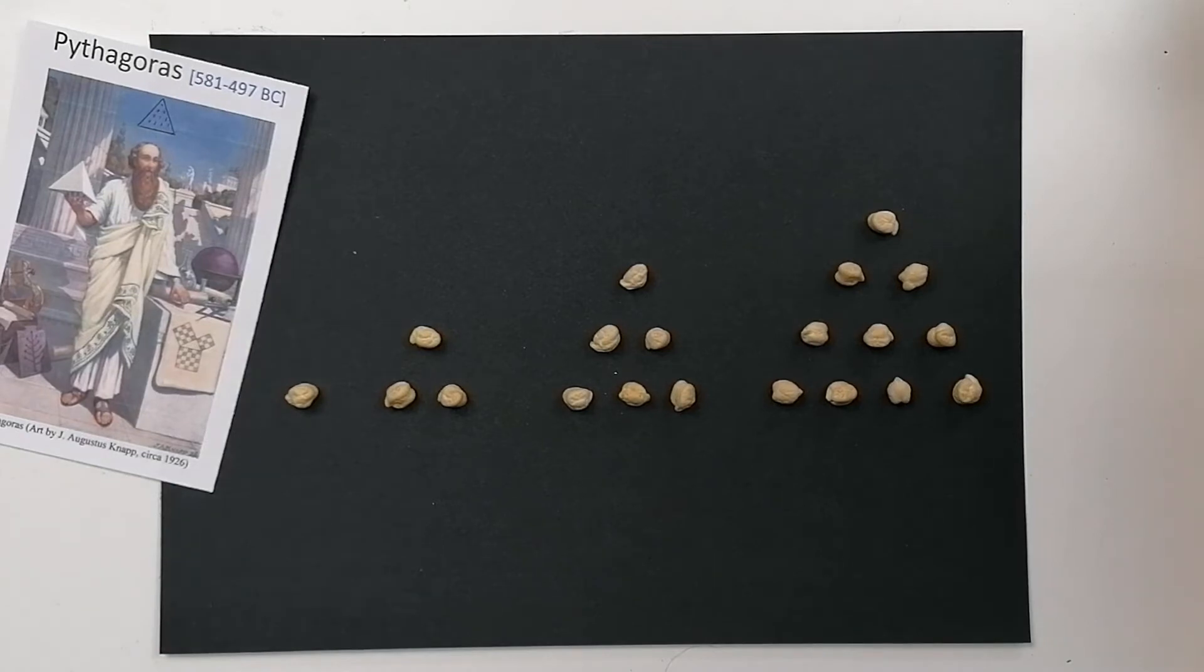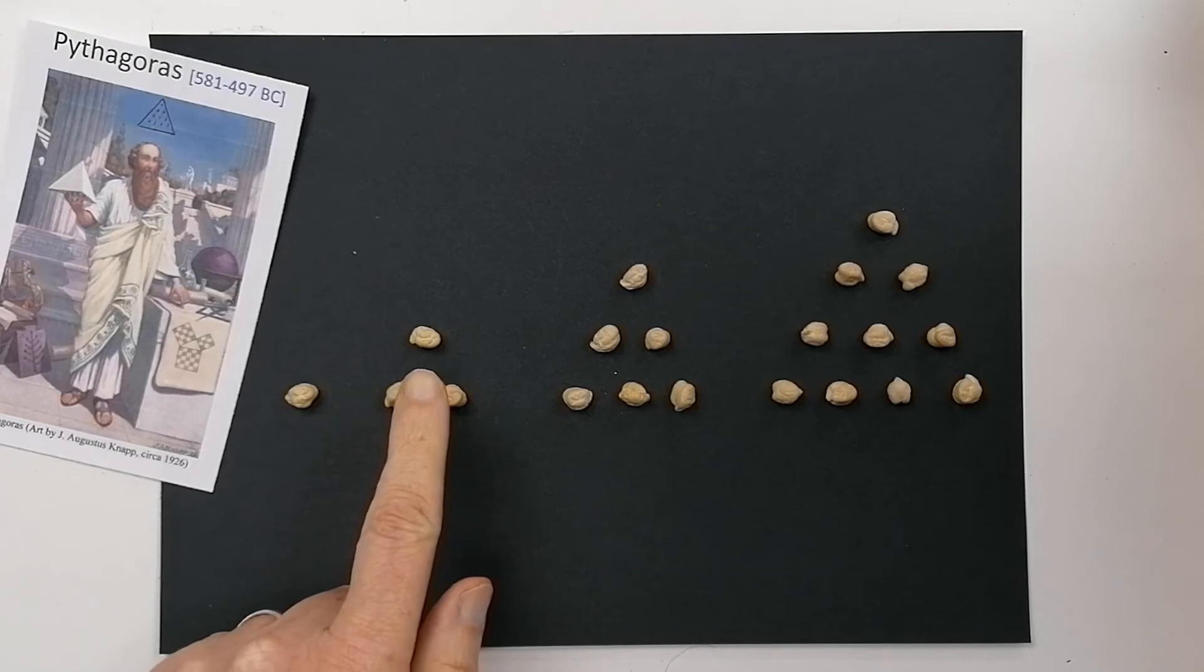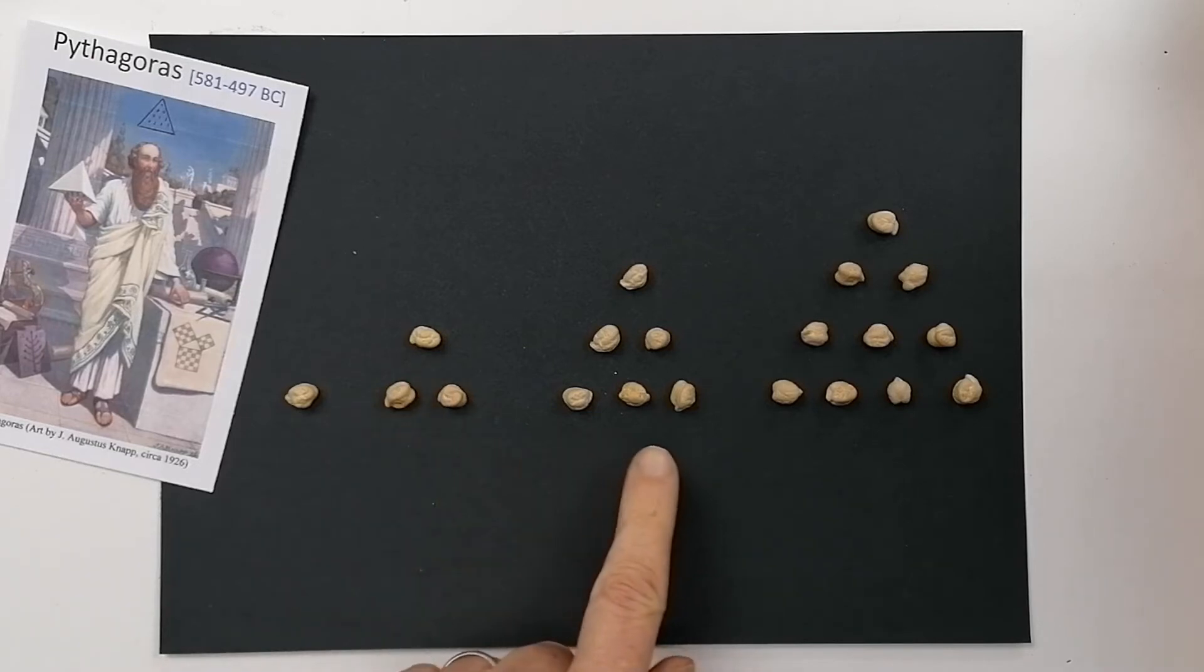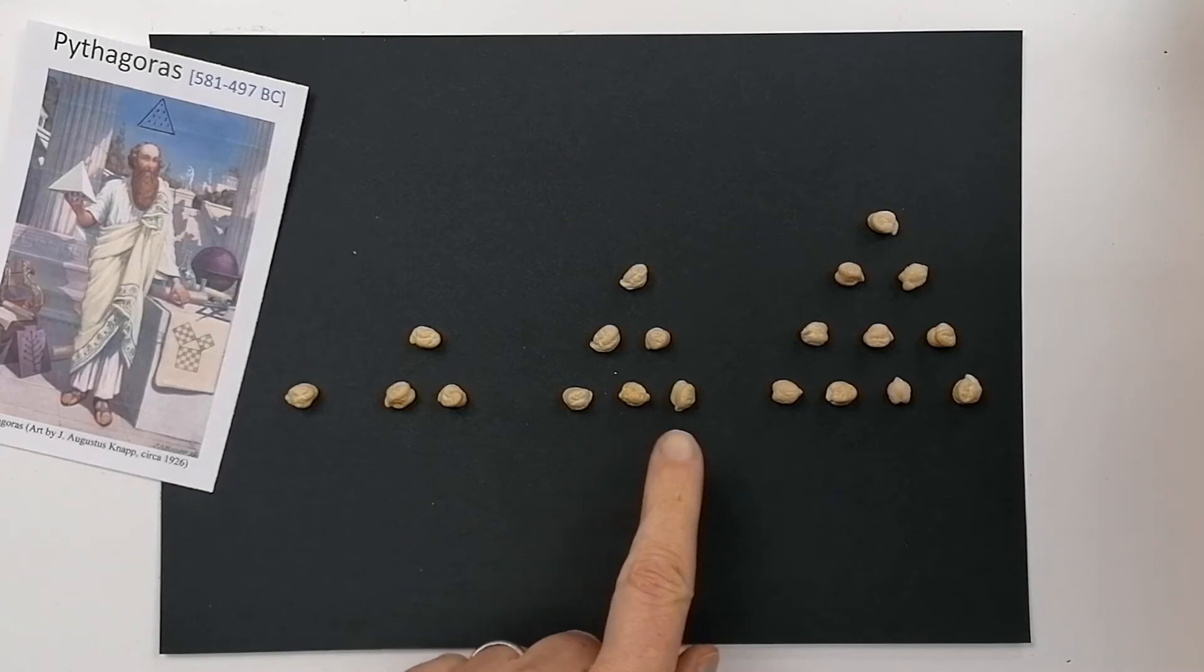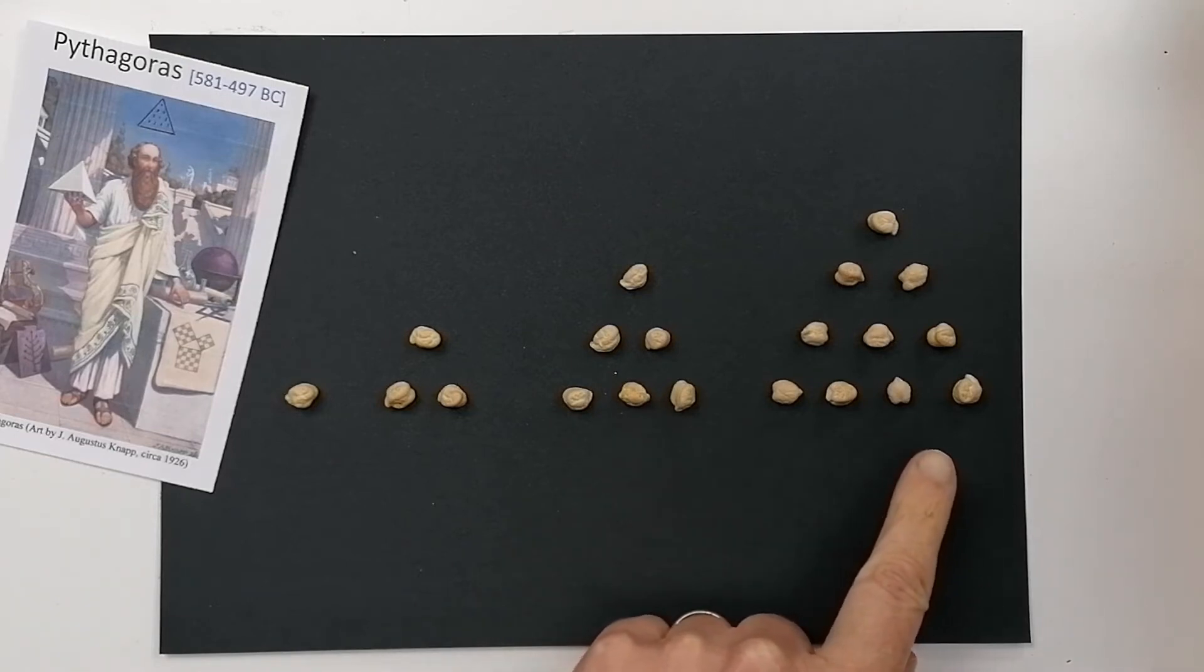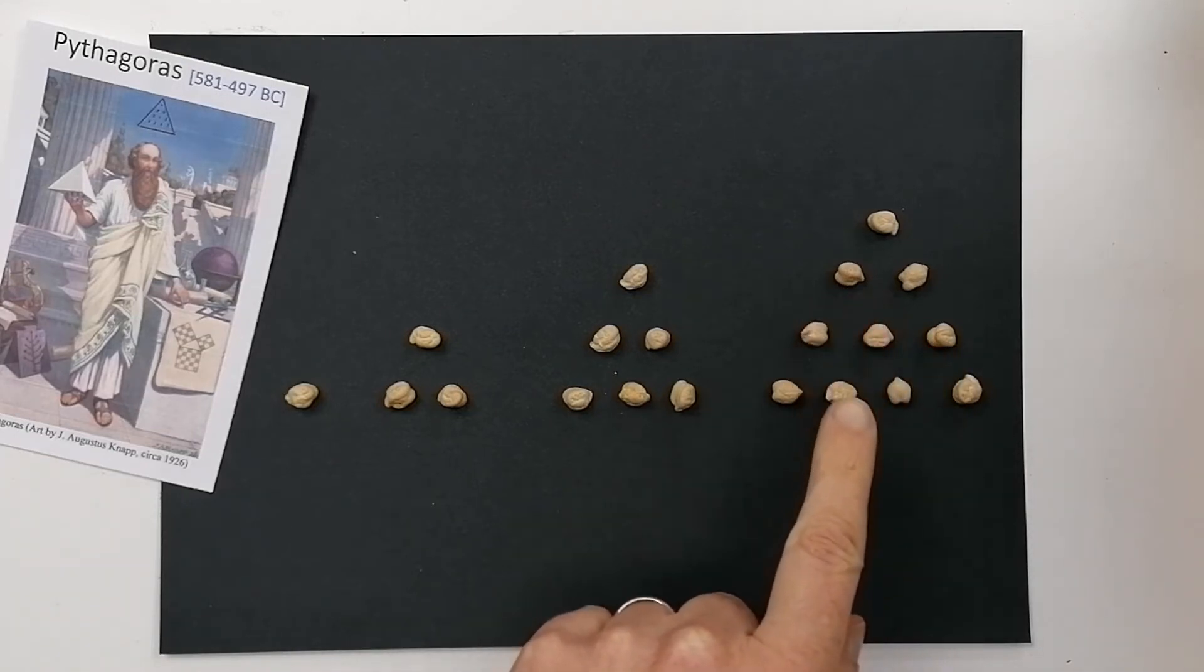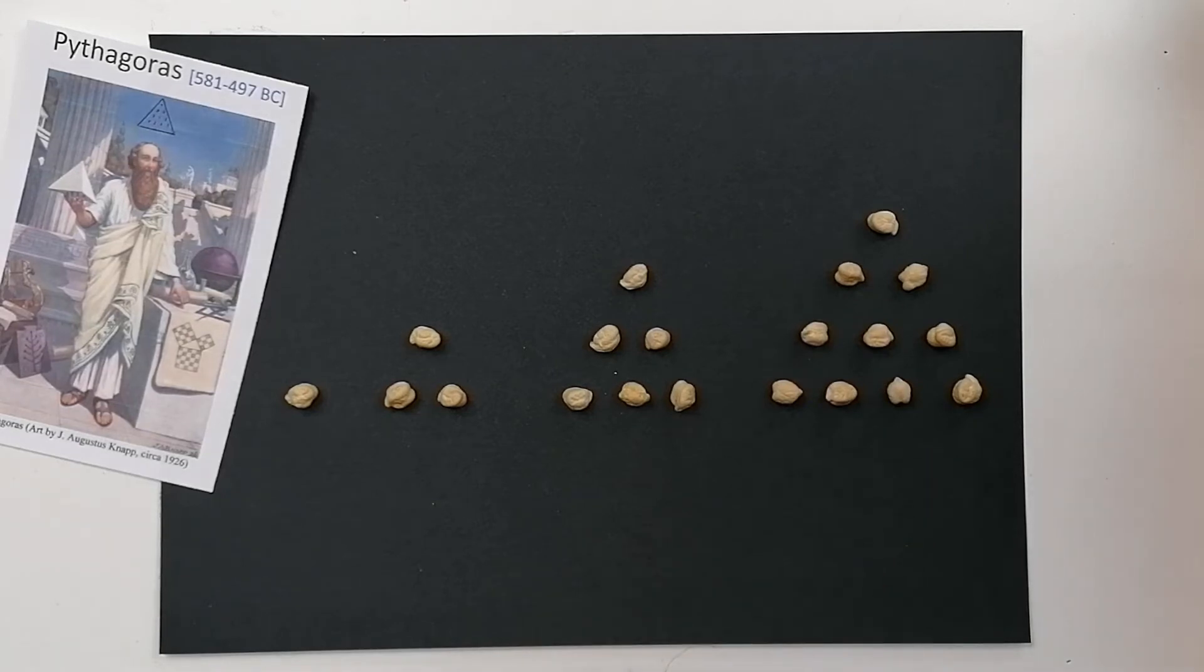Pythagoras also looked into other shapes and numbers. These are called the triangular numbers or the triangle numbers. So you start with one and then two. And when you have two in the base, you need a third one to make a triangle. When you have three at the base, you need six to have a triangle. And when we have four at the base, you need to have 10 altogether to have a triangle.